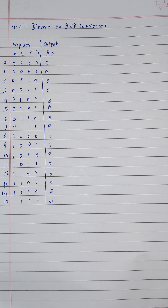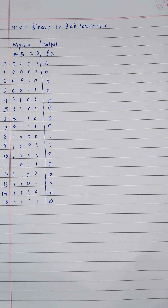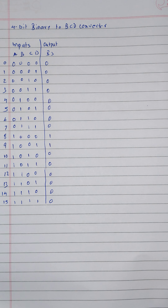Hello friends. In the last part, we have seen the 4-bit binary to BCD converter and we have seen the truth table of it and the equation of B4. In this part, we will see the equation of B3.